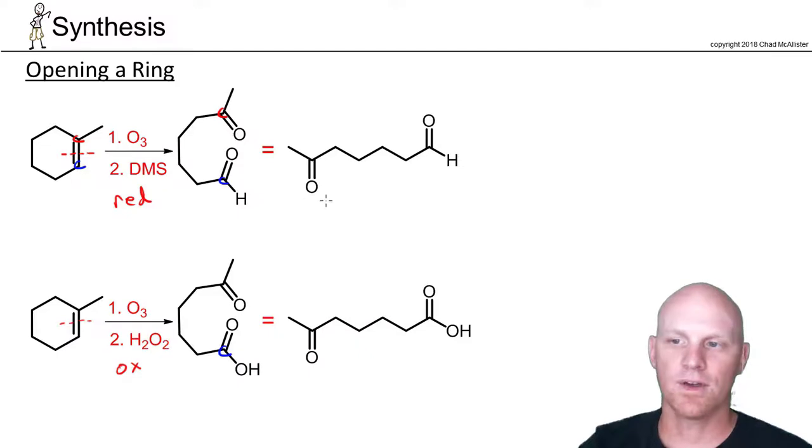Whether you want to write this in the straight chain forms or kind of curled around, which is how I like to do it, take your pick. But you do have to understand how this applies to synthesis. This is the only way you really know how to open up a ring. So if you're doing a synthesis problem and you start with a ring but don't end up with a ring, you know somewhere along the way you had a ring that either had an alkene or alkyne in it, more likely alkene, and you did ozonolysis.